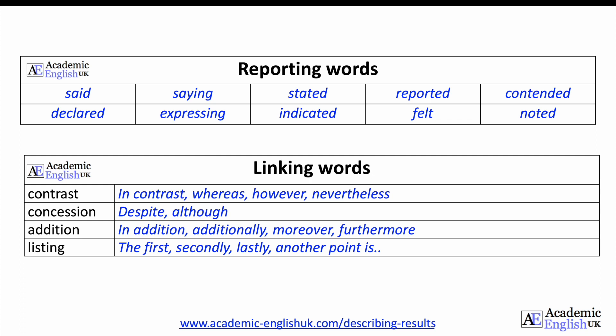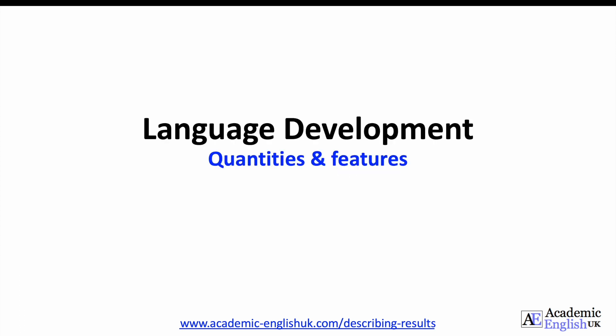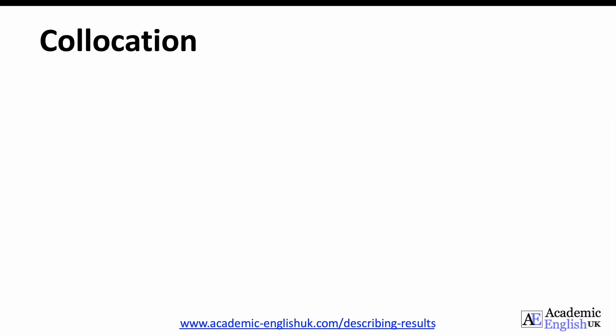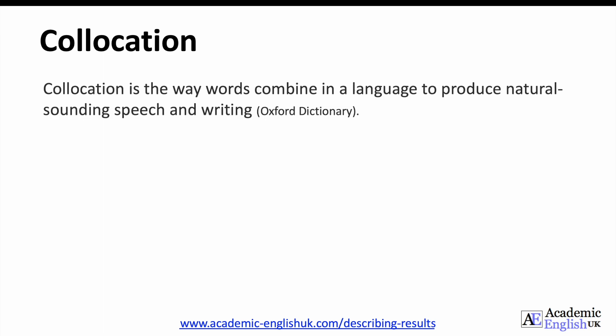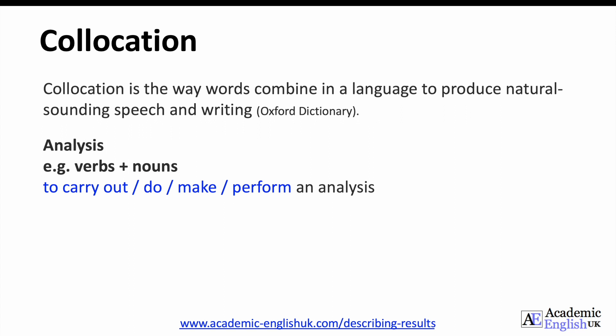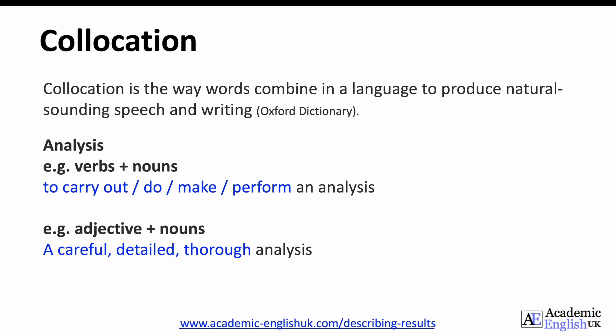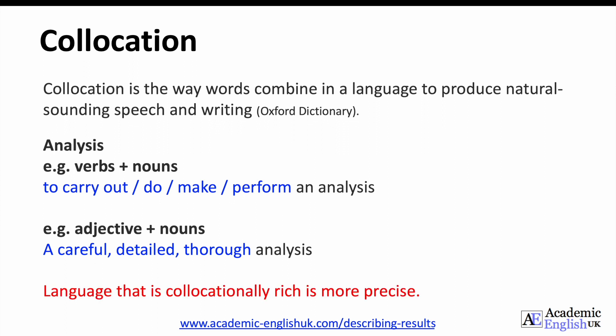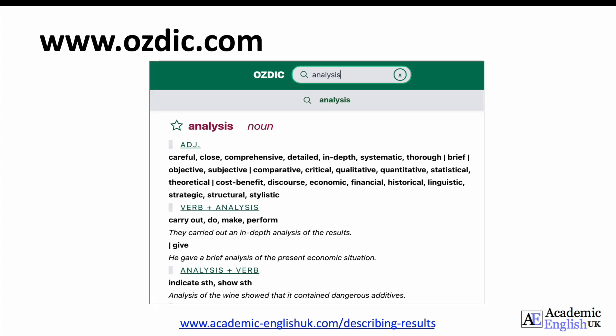Now we'll start to look at language development of referring to quantities and features using adjective collocations. But just before we do this, I'll explain collocation in case you're unsure what this means. According to the Oxford dictionary, collocation is the way words combine in a language to produce natural sounding speech and writing. If I use the word 'analysis' as an example, the verbs that collocate with it are these, and the adjectives that collocate with it are these. Basically, language that is collocationally rich is more precise and accurate. I tend to use the website ausdic.com for collocations — it's fantastic, as you can see here.